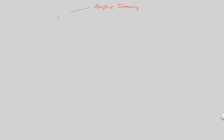Adaptive immunity takes place as both a humoral response and a cell-mediated response. In order to effectively utilize adaptive immunity to defeat and kill a pathogen, a humoral response will occur simultaneously with a cell-mediated response. This is basically a double-edged sword seen with adaptive immunity.